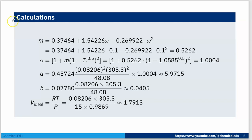First we calculate A, but we need alpha, and for alpha we need M. Using the M correlation with omega = 0.1, we get M = 0.5262. Then alpha = [1 + 0.5262(1 - 1.058^0.5)]² = 1.0004.